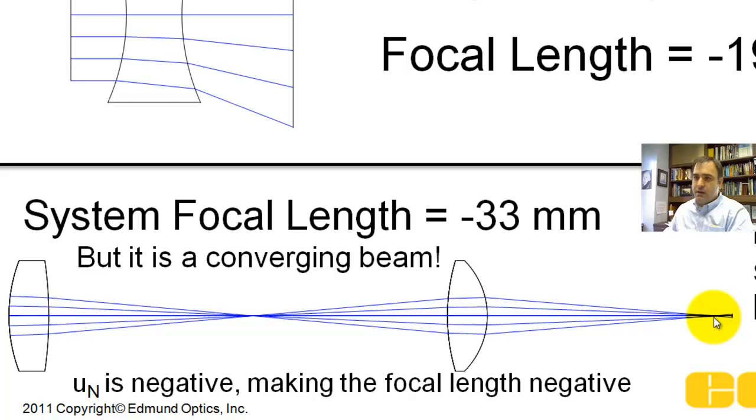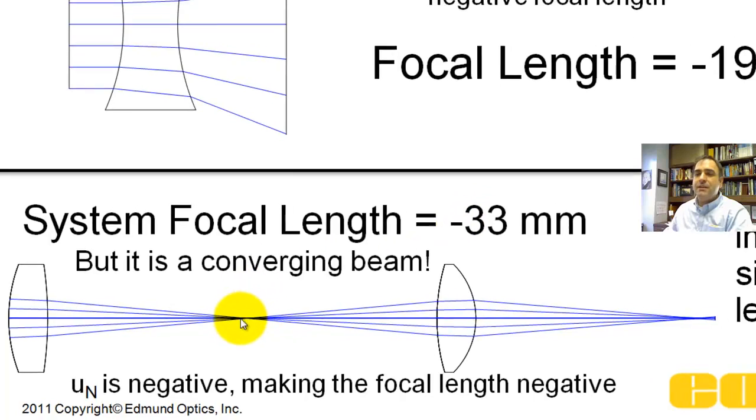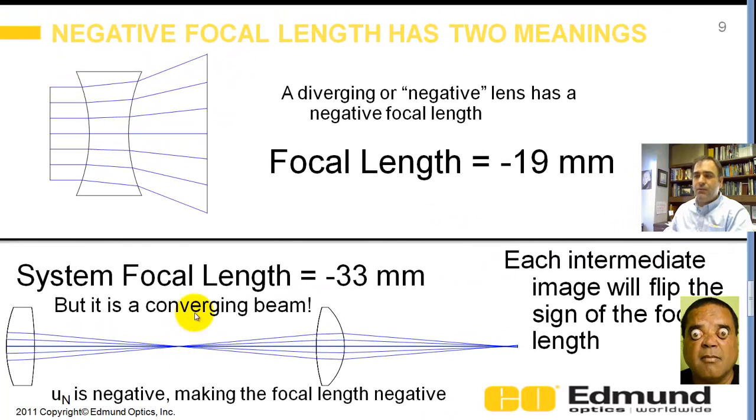ZMAX does not model it that way. Because your marginal ray angle is negative in this case, the focal length, according to ZMAX, is going to be negative. This is a converging beam with a negative 33mm focal length. And again, this intermediate image is flipping the sign on the focal length.